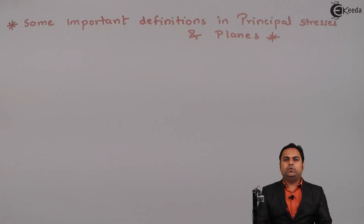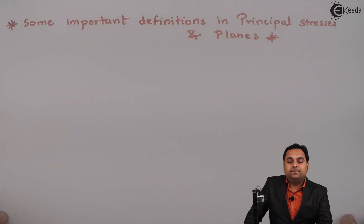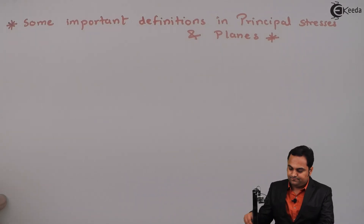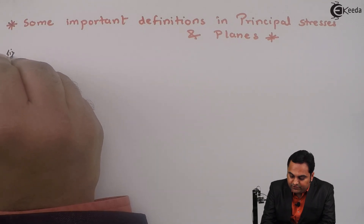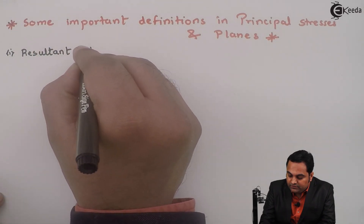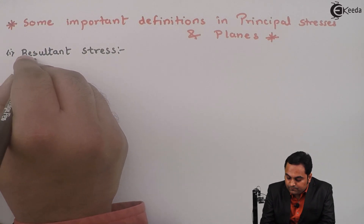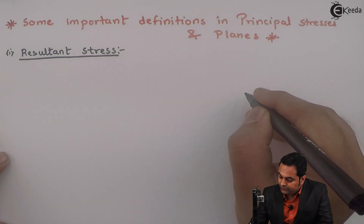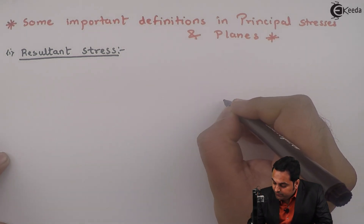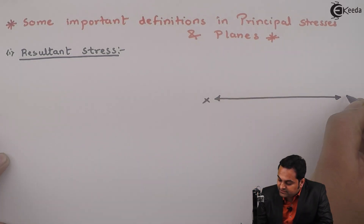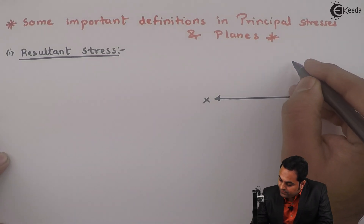Hello friends, in this video we will see some important definitions which are necessary to understand the chapter of principal stresses and planes. Let us get started. The first definition is of resultant stress. For resultant stress, I'll draw the diagram — assuming that there is a plane here, this XX indicates a plane.